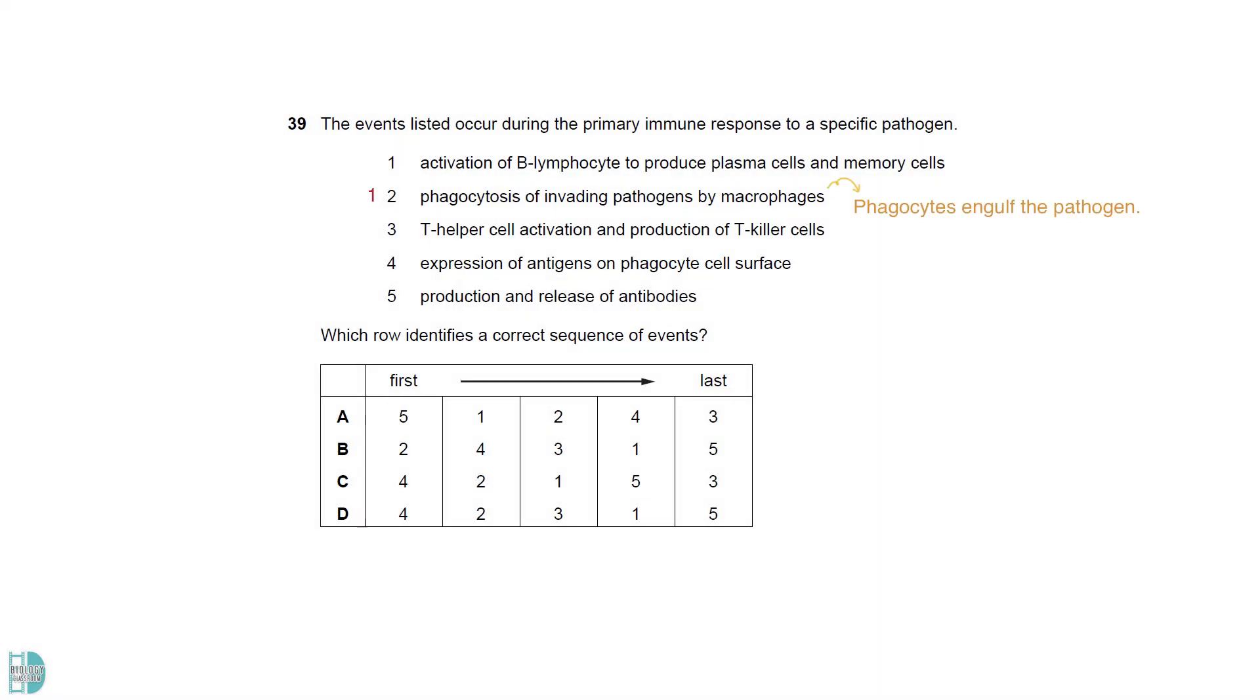The first event is the engulfing of the pathogen by phagocytes. Then, antigen presentation occurs. T helper cells are activated. They release cytokines to stimulate other cells, such as killer T and B lymphocytes. Plasma cells will then secrete antibodies.